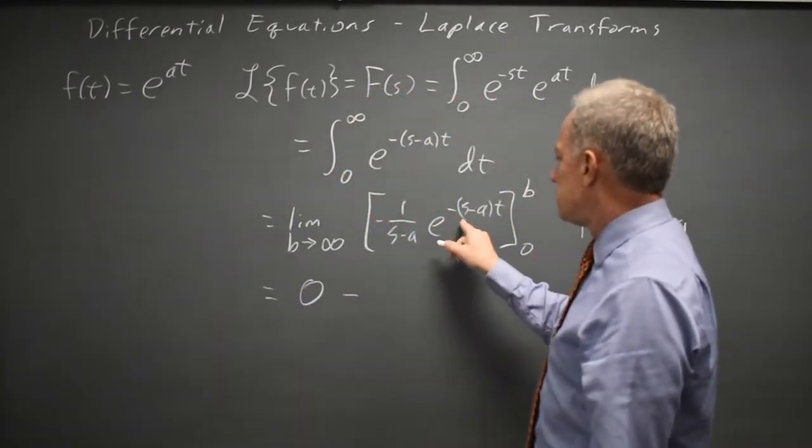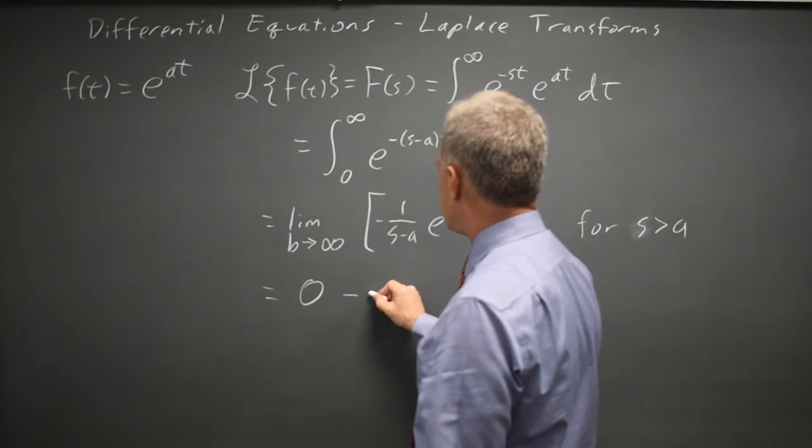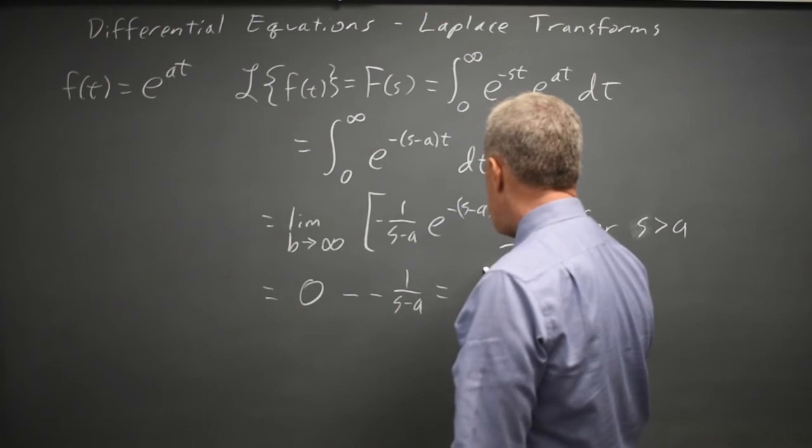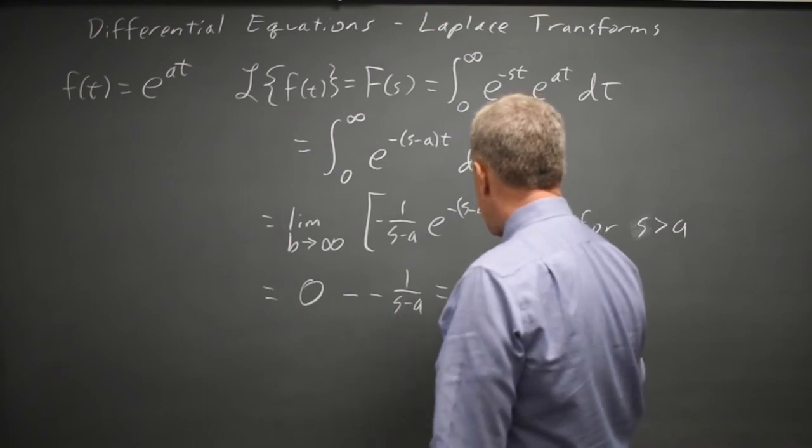At the lower limit, e to the zero is one, so it's minus a negative 1 over s minus a minus a negative plus. So that's 1 over s minus a.